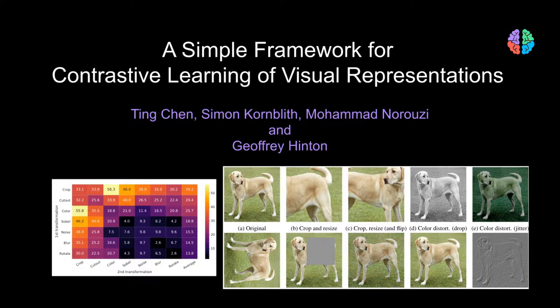For such a simple approach, the results are truly mind-blowing. Unlike other papers, this paper is a bunch of tips — like large batch size, more training epochs, and wider network — to make the most out of contrastive learning. Let's learn about the components of SimCLR and the results presented in this extremely well-written paper from Google.